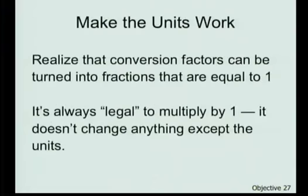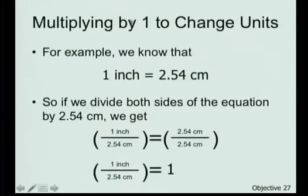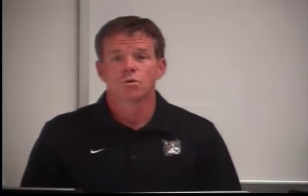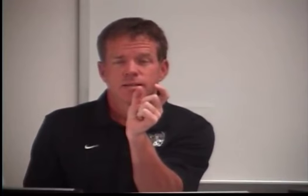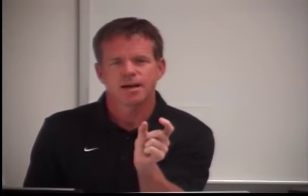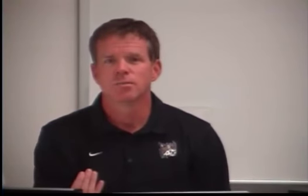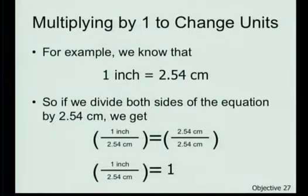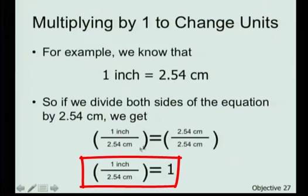All of our conversion factors are essentially equal to 1, because equivalent measurements divided by themselves equal 1. One inch and 2.54 centimeters are the same length — just expressed in different units. So 1 inch over 2.54 cm is like 2.54 cm over 2.54 cm, which equals 1. The same applies to 2.2 pounds being equivalent to one kilogram: that's the same thing expressed differently.